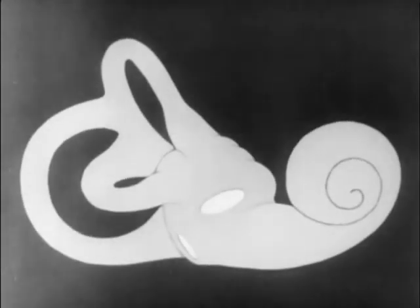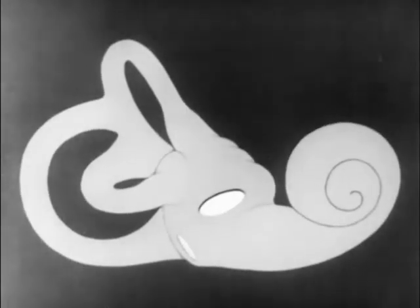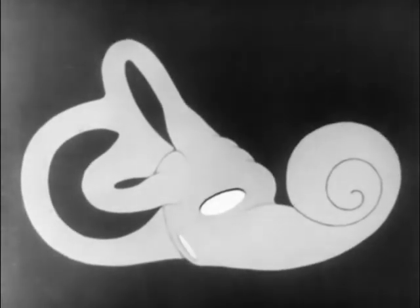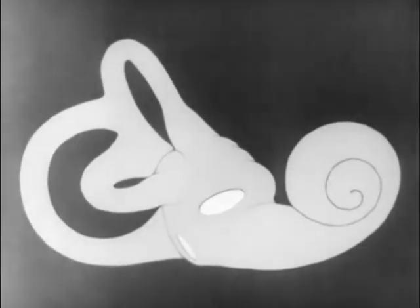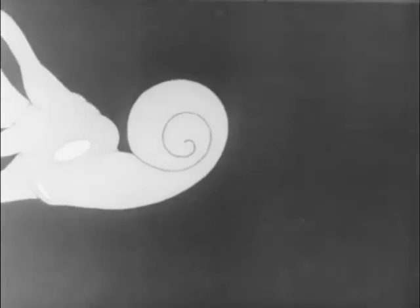There are two openings, or windows, into the cochlea. The stirrup fits into the uppermost opening, called the oval window. The stirrup transmits sound waves through the oval window to the fluid in the cochlea.